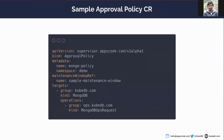Now let's see a sample approval policy custom resource. Approval policy is used to tell the supervisor to execute a particular type of ops request without any human approval. The user can specify a maintenance window reference in which to execute those particular ops requests. In the target section, the user can specify a list of group kinds, and under each group kind, a list of operations specifying the group and kind of the ops request for which this approval policy will be valid.